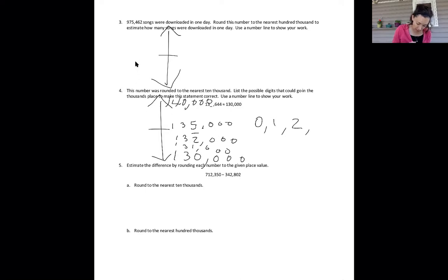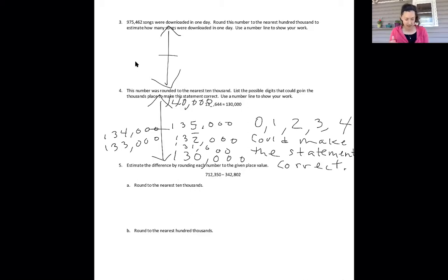I'm running out of room. I'm going to go on the left side. 133,000 would keep us rounded below, and also 134,000 would round down. All right, there's all my digits that would now round down to 130,000. So these all could make the statement correct, and there we go.